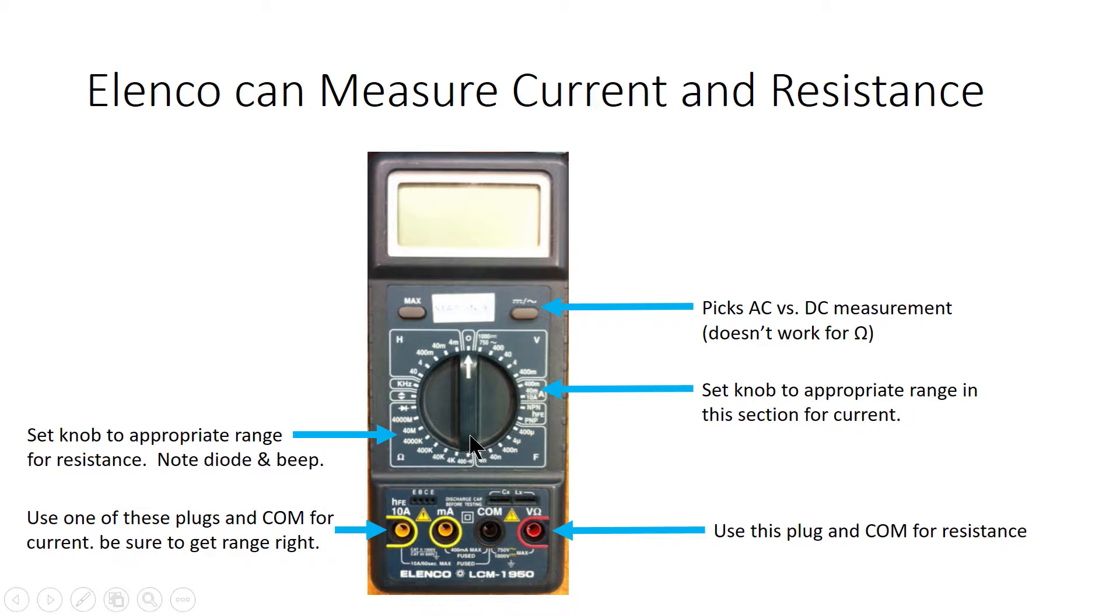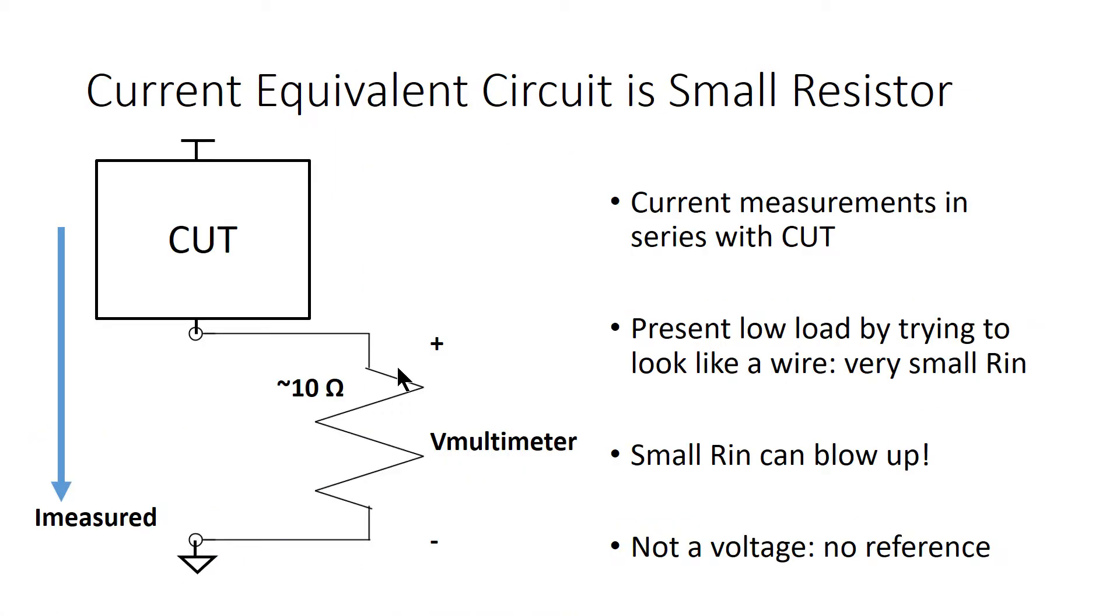The other option here is a diode, which is useful for measuring the forward drop across diodes, but we don't use that a lot in E80.